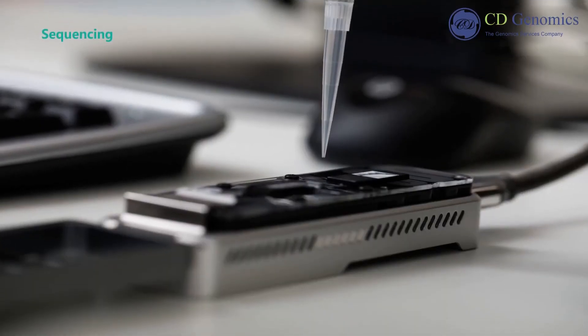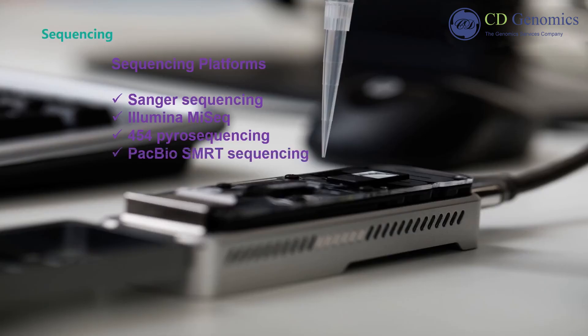16s ribosomal RNA-based sequencing is currently conducted using several technologies, including large-scale clonal Sanger sequencing, Illumina MiSeq, 454 pyrosequencing that targets specific regions or is linked to barcoding strategies, and PacBio SMRT sequencing.